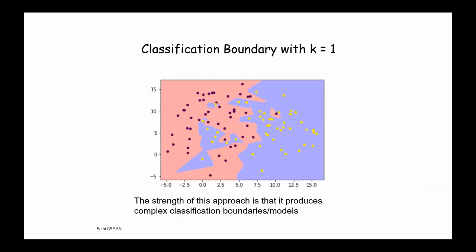With K equal to one, the boundary is even more complex. One can do similar plots for K equal to three, five, and so on. The key point is that KNN produces highly complex, nonlinear boundaries.